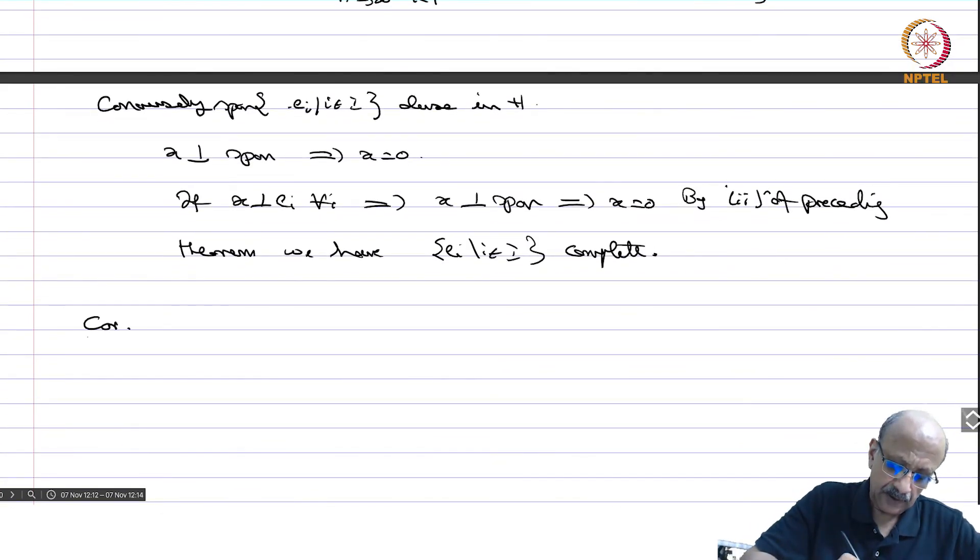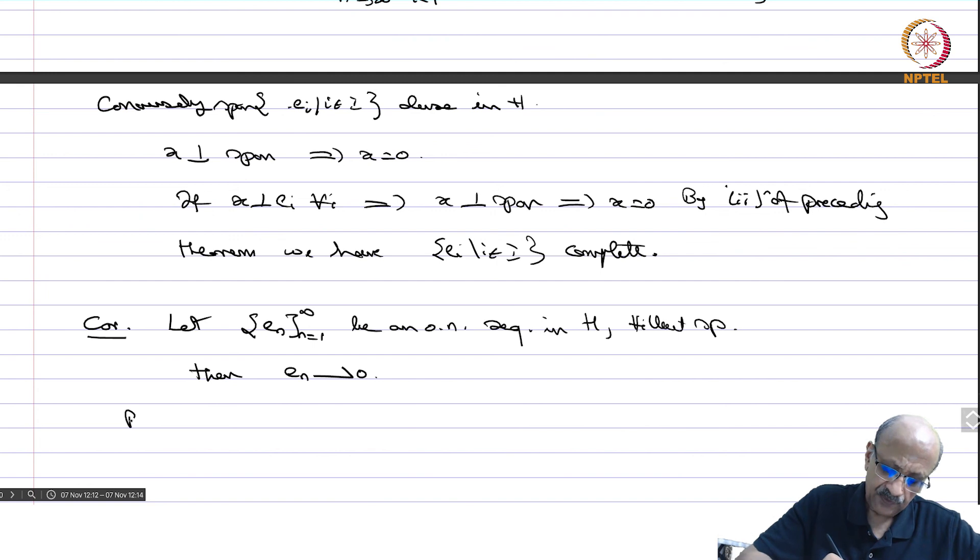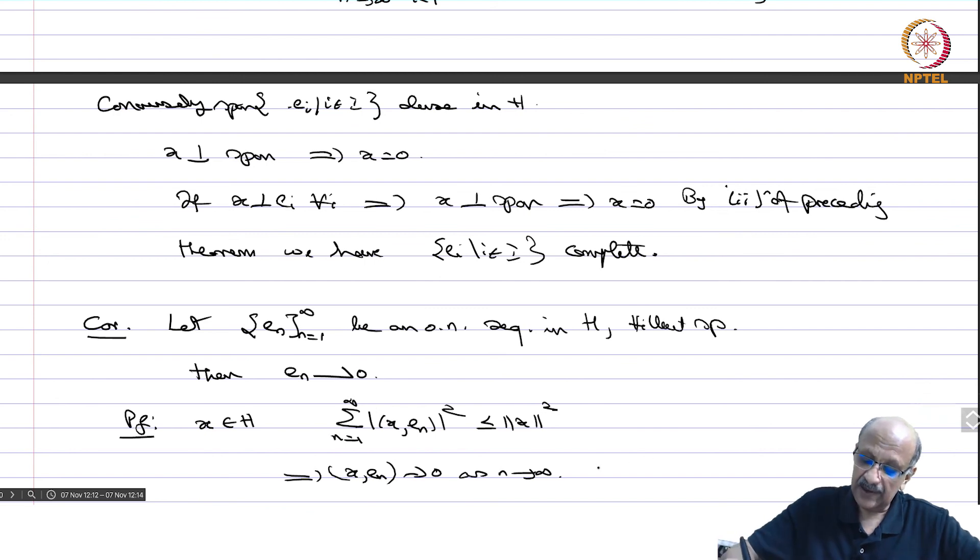One more corollary. Let e n n equals 1 to infinity be an orthonormal sequence in h, h is a Hilbert space. Then e n weakly converges to 0. Proof. If x belongs to h, then we have sigma n equals 1 to infinity mod x e n square is less than equal to norm x square. This is the Bessel's inequality. Therefore, this is a convergent series, this implies that x e n tends to 0 as n tends to infinity. Now, every continuous linear functional by Riesz representation theorem comes as an inner product with respect to x and therefore, this simply implies that e n goes weakly to 0.